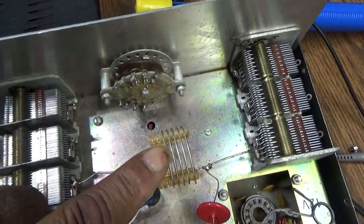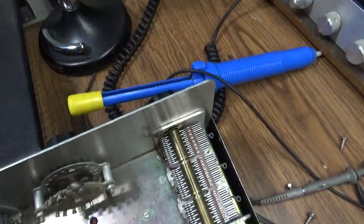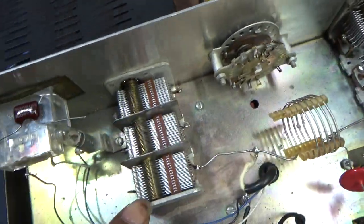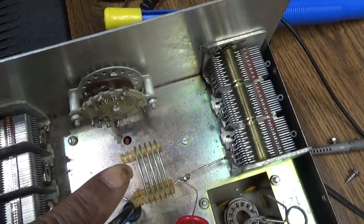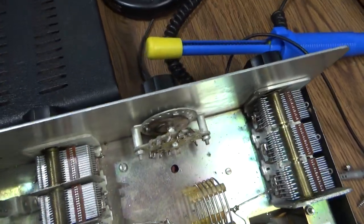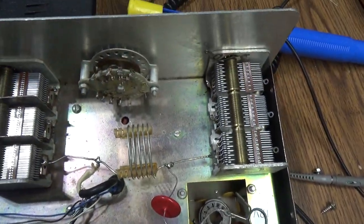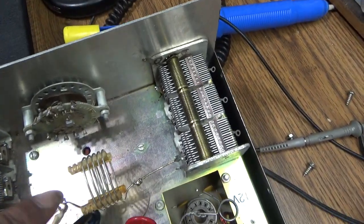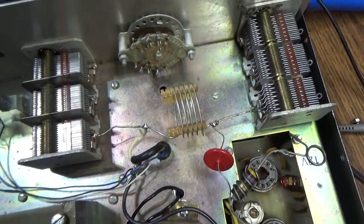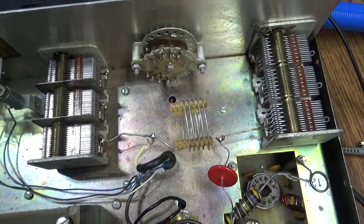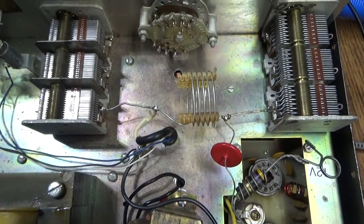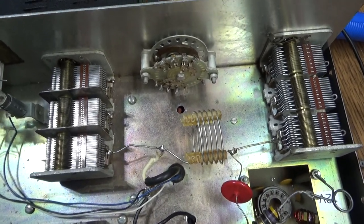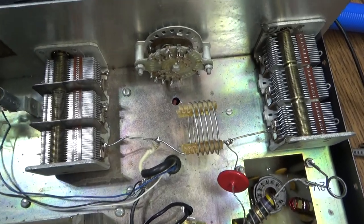Then you got your tank circuit or another name is your tuning circuit. You got your tune, load, and your coil. When you have a tune and a load and a coil it's called a PI circuit. If you add another coil after this one, a second one, it would be called a PI-L with two coils.